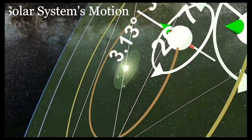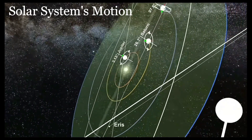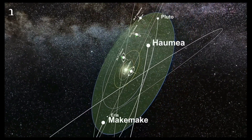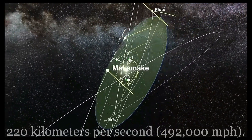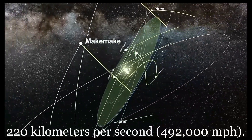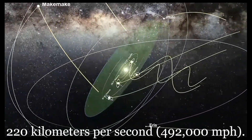Solar system's motion: our entire solar system travels through the Milky Way galaxy at about 220 kilometers per second — that's 492,000 miles per hour.